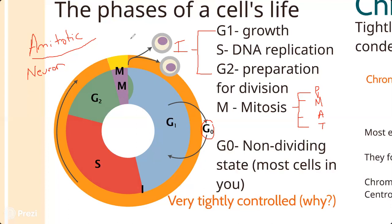For example, birds used to have teeth - their ancestors did - but every now and then a genetic mutation produces a chicken born with teeth; that's an atavism. Similarly, unicellular life is a former ancestral trait of multicellular life. If a cell in your body has a mutation causing it to revert to single-celled behavior, that's an atavism. Multicellular life is incredibly complex - it took one and a half to two billion years to evolve, and it's a tightly choreographed dance among cells.